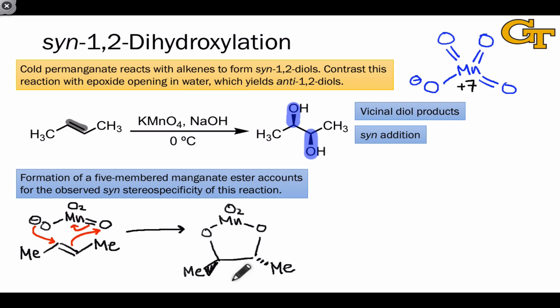This electron flow occurs in a single elementary step, meaning that the trans configuration of the alkene is preserved in this manganate ester intermediate.